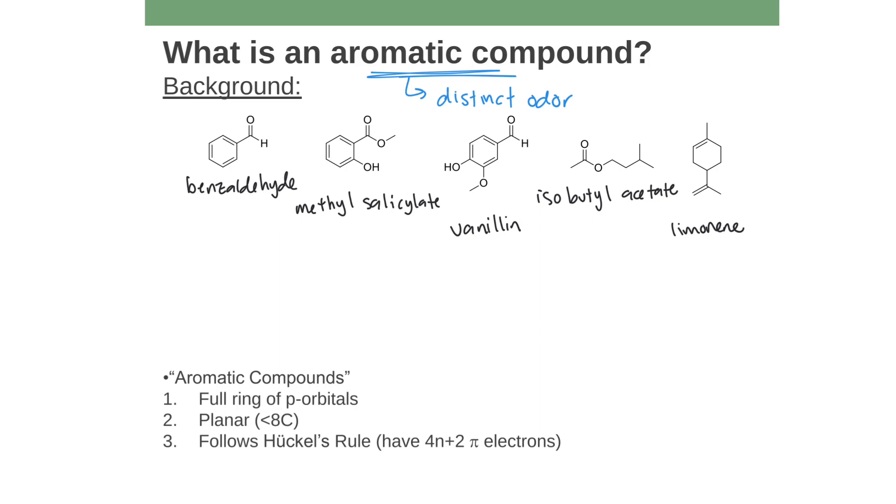And so here are five different molecules. They all have aromatic qualities in that they all have distinct smells. So for example, benzaldehyde is a sort of almond cherry smell, kind of like an amaretto sort of smell. Methyl salicylate, one of my favorites, is oil of wintergreen. This is a wintergreen smell. I really like it. Not everyone likes wintergreen. I'm a big fan, personally. Vanillin, you'll never guess what it is in. It's in vanilla. It's one of the major components of vanilla.